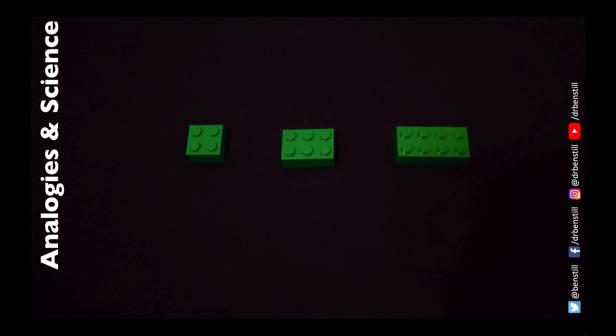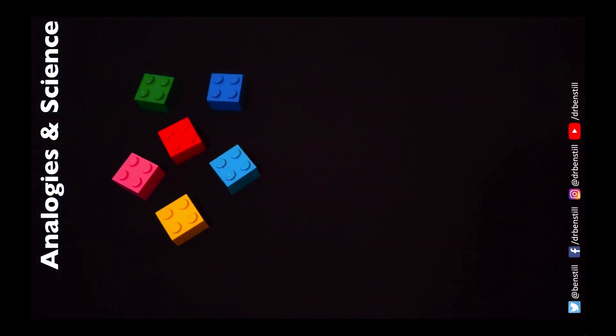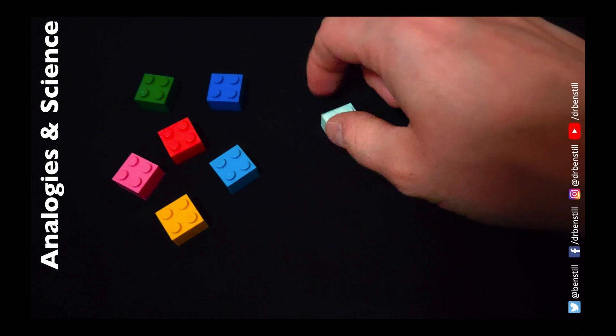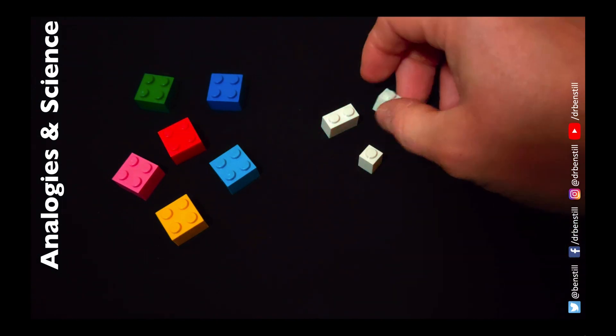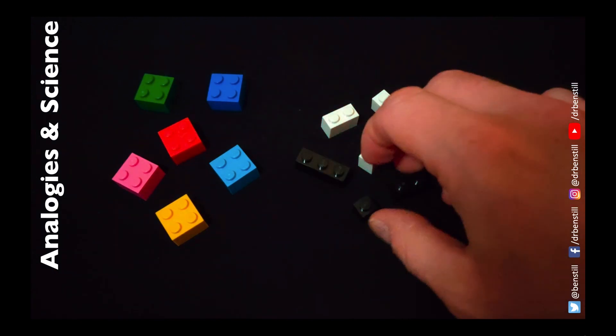We can also use it to distinguish one type of block from another such as using colour or using white and black blocks. Using colour or lack of colour allows us to distinguish what types of forces these particles actually interact with.